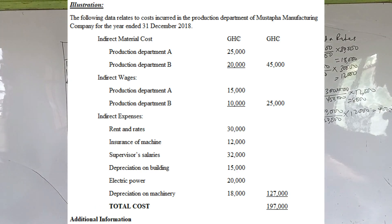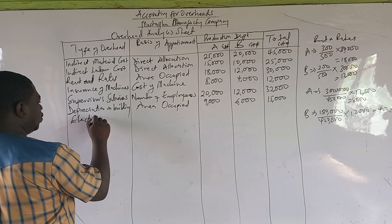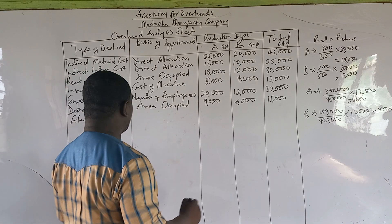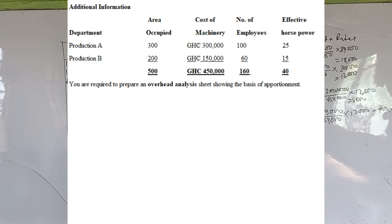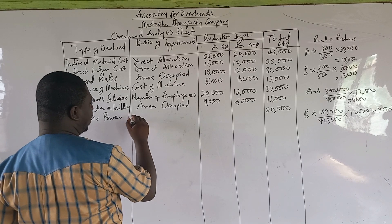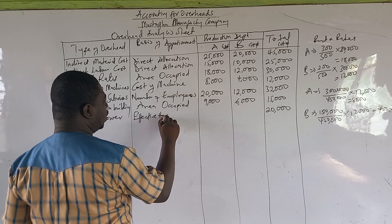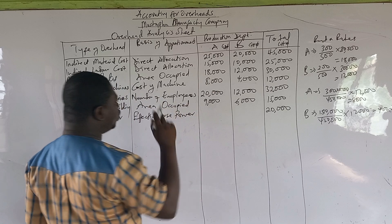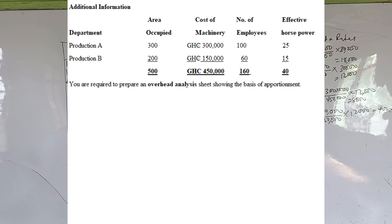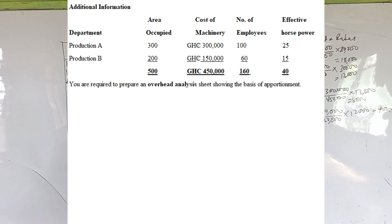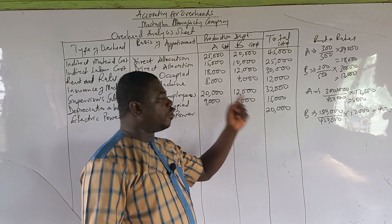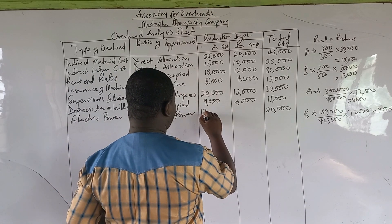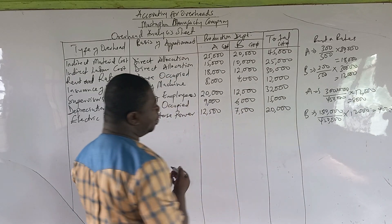Electric power: 20,000. Although we were not told whether it is metered or non-metered, the most appropriate basis is effective horsepower. Department A is 25, Department B is 15, total ratio is 40. Department A: 25 over 40 times 20,000 gives 12,500. Department B: 15 over 40 times 20,000 gives 7,500.